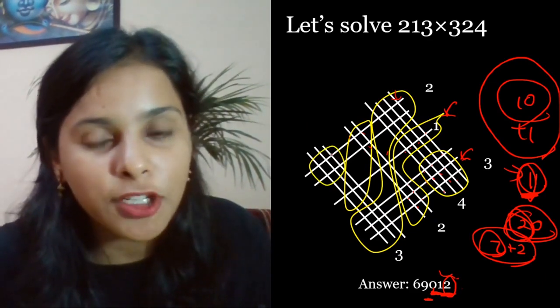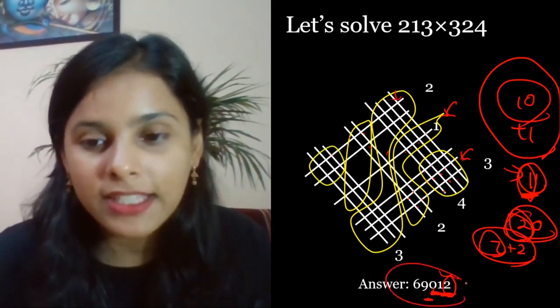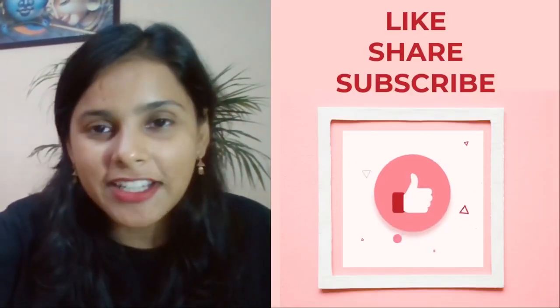Now the last group, you will count how many intersection points. 1, 2, 3, 4, 5, 6. So the answer is 6, 9, 0, 1, 2. It is fun, Japanese trick!